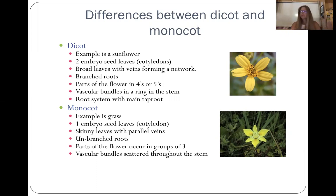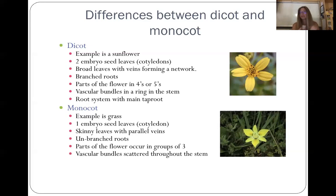Another way to identify a dicot — if you can't see the plant when it first develops — is that it's going to have big leaves with a central vein and lots of veins branching off of it. It's going to have branched roots, so if you yank this plant out of the ground it won't be one skinny long root going down but a bunch of branched roots. The flowers will have petals in groups of fours or fives — this flower right here has five petals. That's a dicot.